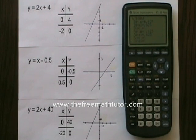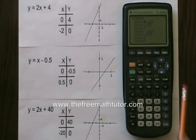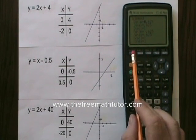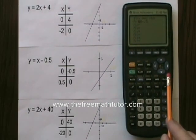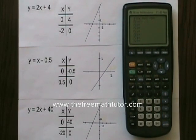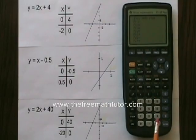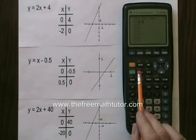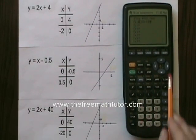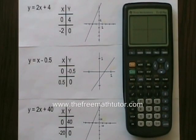Now let's try entering the third equation. I hit y equals. I hit clear to remove the second equation. And now I have to enter 2x plus 40. 2x plus 40. And I hit graph. And my graph doesn't show my line.